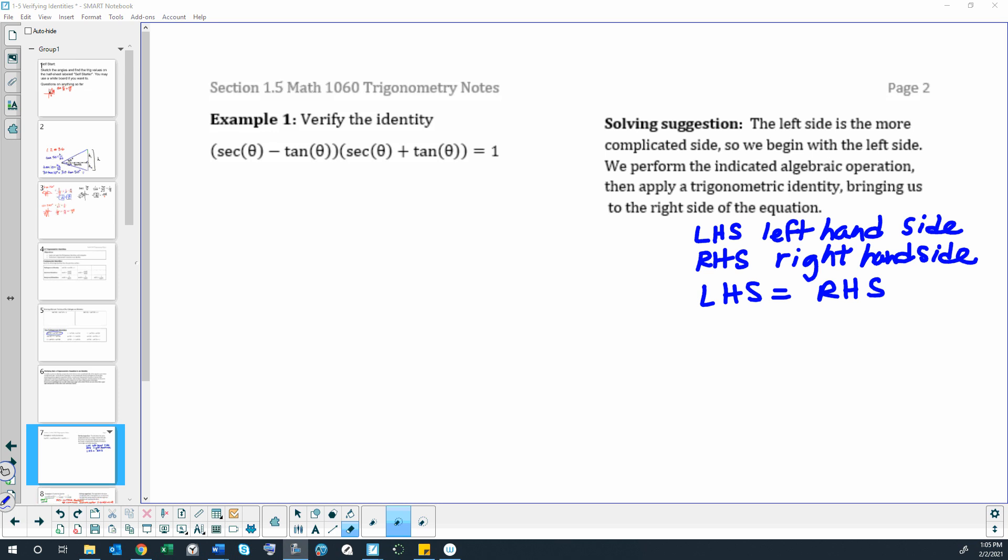First of all, let's talk about terminology I'm going to be using. When I write LHS, that refers to the left-hand side of our problem. When I write RHS, that refers to the right-hand side of our problem. And our goal is to make the left-hand side match the right-hand side.